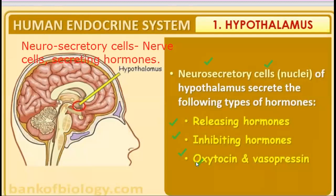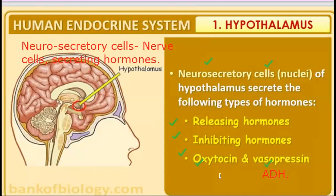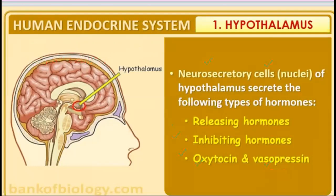Oxytocin is the love hormone — it is used in pregnancy. Vasopressin is the ADH hormone, which means anti-diuretic hormone, which we have studied in excretion. So let's go ahead and learn the definitions: releasing hormone definition, inhibiting hormone definition, and oxytocin and vasopressin functions.